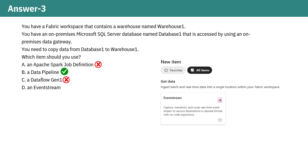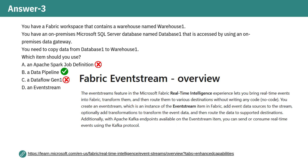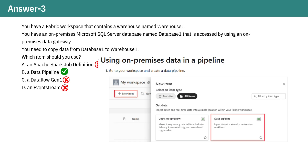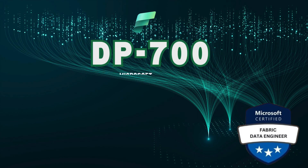Option D: An event stream. Event streams specialize in ingesting real-time streaming data. Since our goal is to transfer data from SQL Server to a Fabric warehouse, likely in batches, event streams are not the right tool for the job. So, a data pipeline remains the best option for efficiently handling this task. See you in the next question.